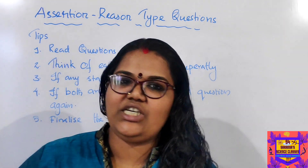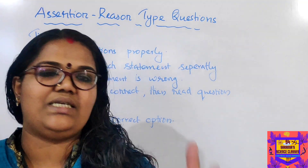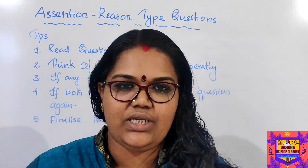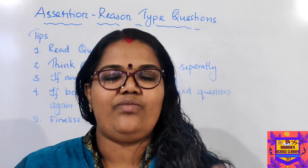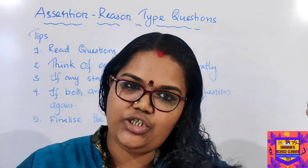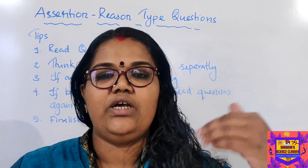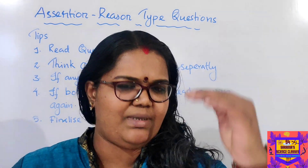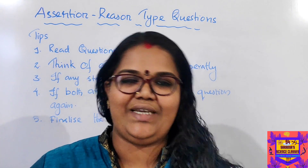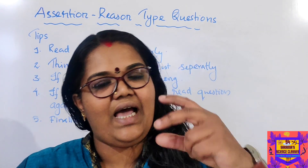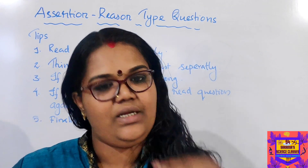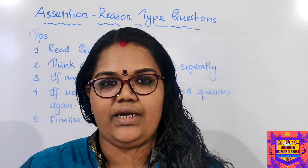The first thing you have to understand about assertion-reason is that it is just two statements. Assertion-reason type of questions contain two separate statements — one will be the assertion and the second will be the reason. We will go for some examples also, but first I will give you some tips and strategies on how to attempt them, then we will go for examples. So you will have two statements: one will be the assertion — that's the first statement — and the second will be the reason.